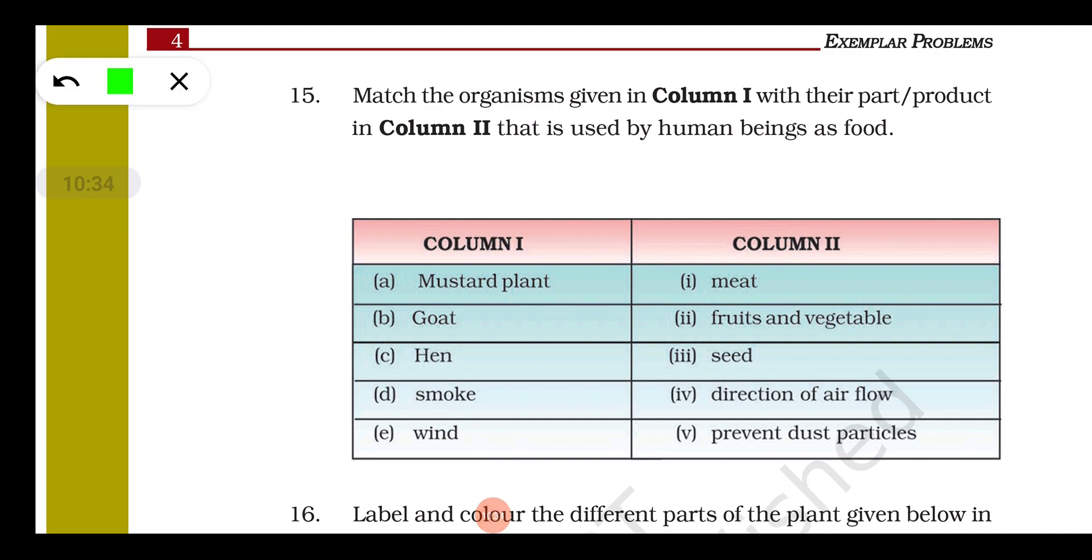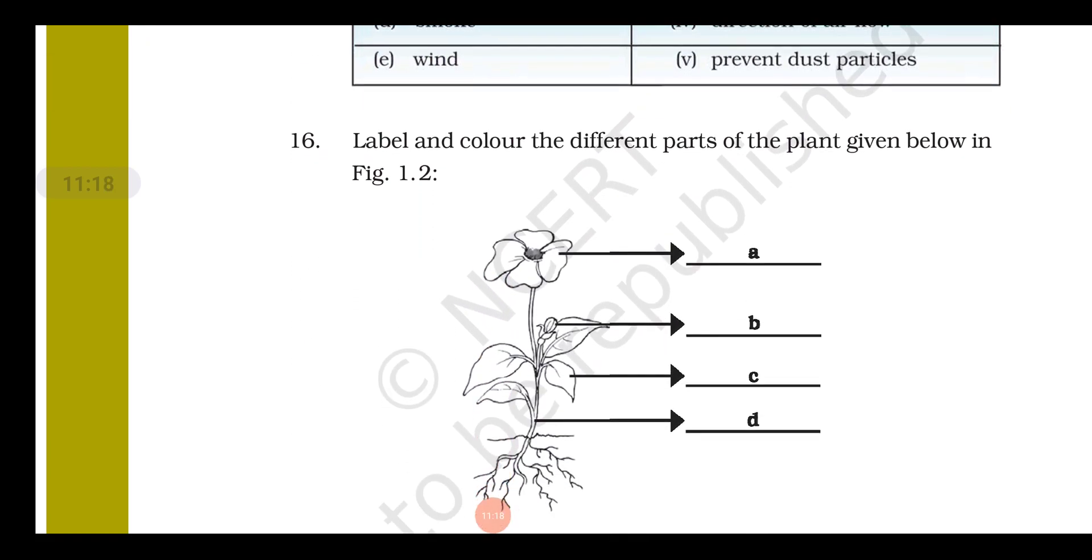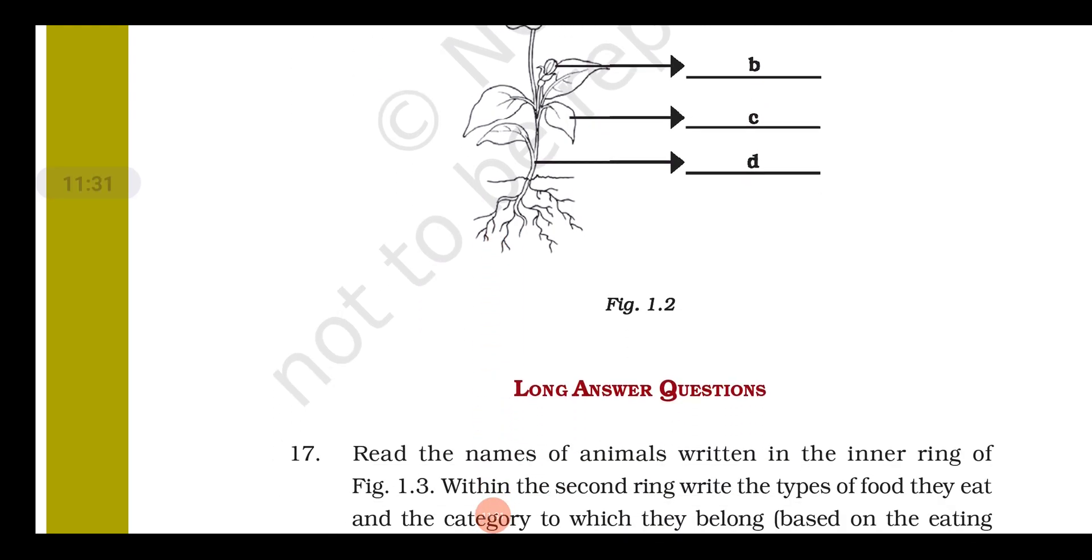Question number fifteen: we have to match column one with column two. Mustard plant - we get seed, and from seed we get mustard oil. Goat - from goat we get meat. Hen - from hen also we get meat. Wind - wind decides the direction of airflow. And smoke - I don't find any relation of smoke with any of the points. If any of you find any relation with option given in column number two with smoke, please put your answer in comment box. Question number sixteen: we have to label - A is flower, B is flower bud, C is leaf, and D is stem.